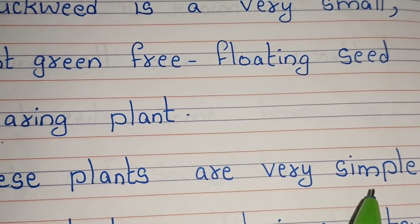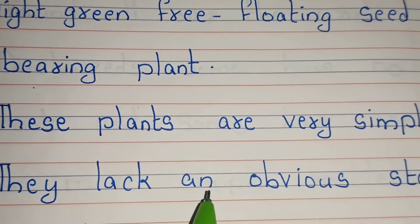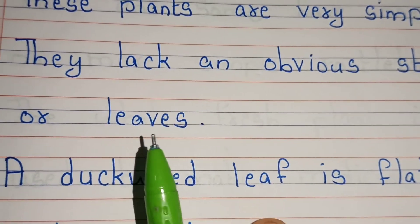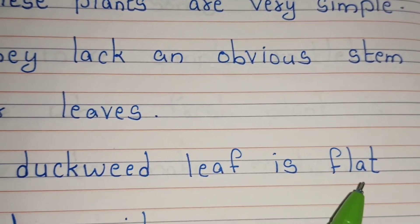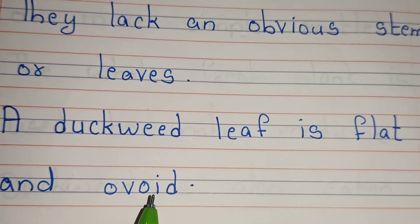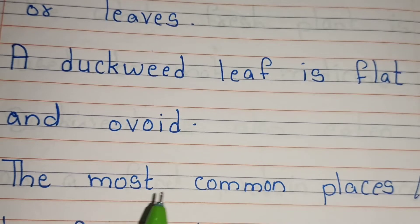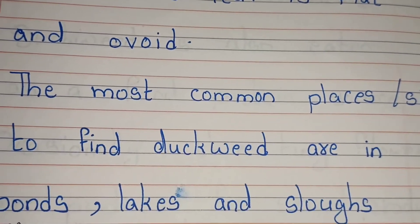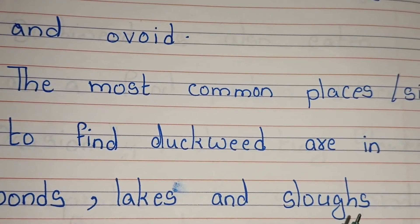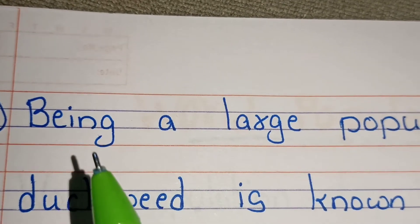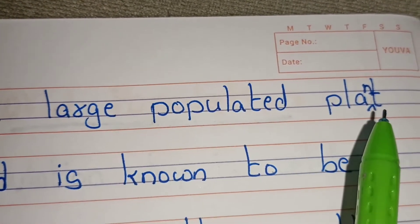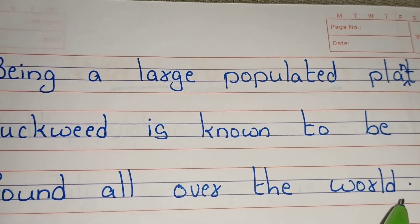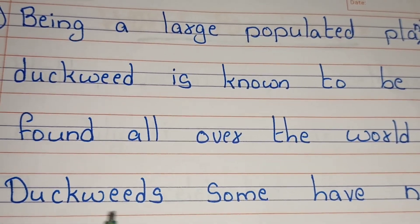They lack an obvious stem or leaves. A duckweed leaf is flat. The most common places or sites to find duckweed are in ponds, lakes, and sloughs. Being a large populated plant, duckweed is known to be found all over the world.